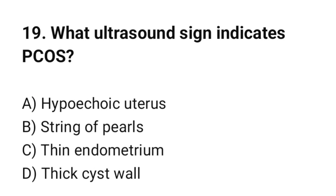Question number 19. What ultrasound sign indicates PCOS? The correct option is B: String of pearls.